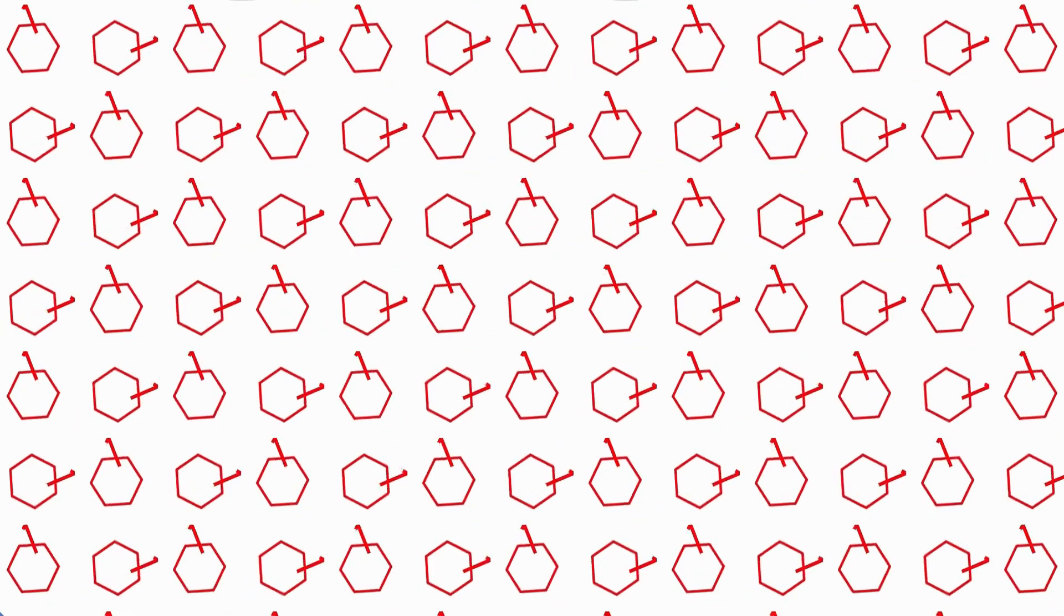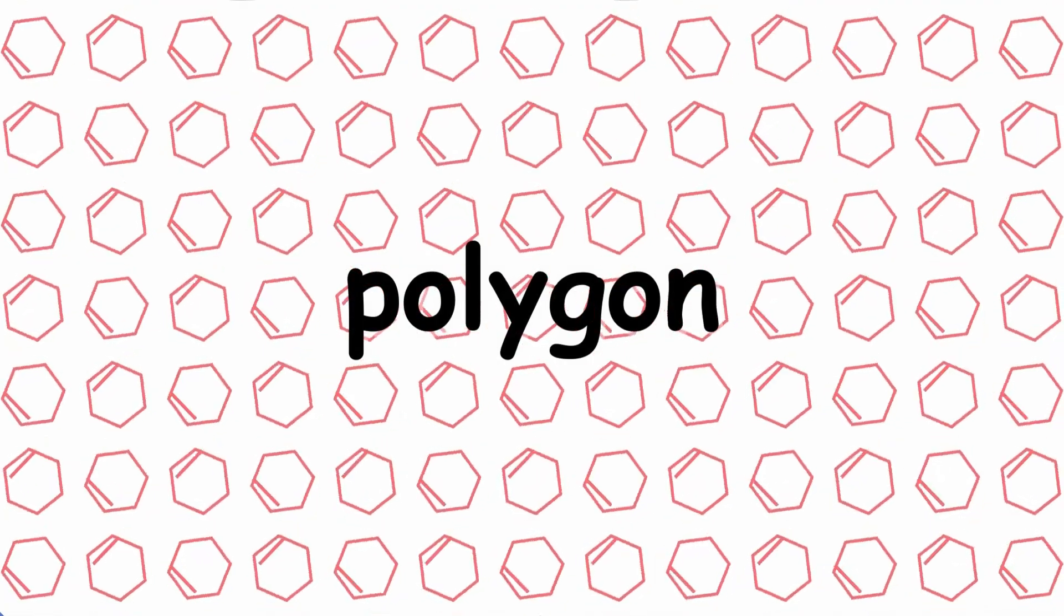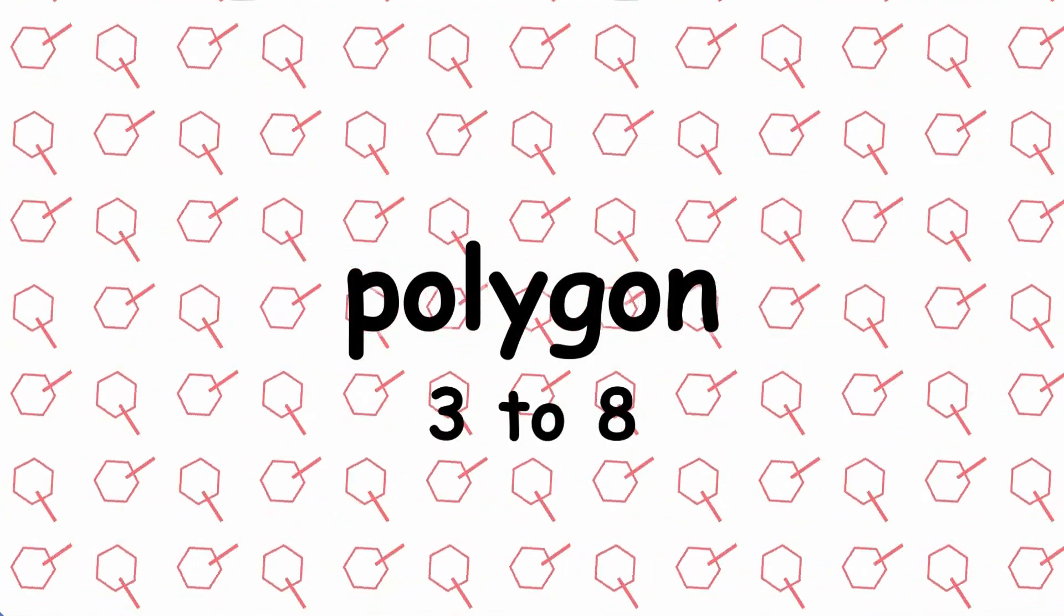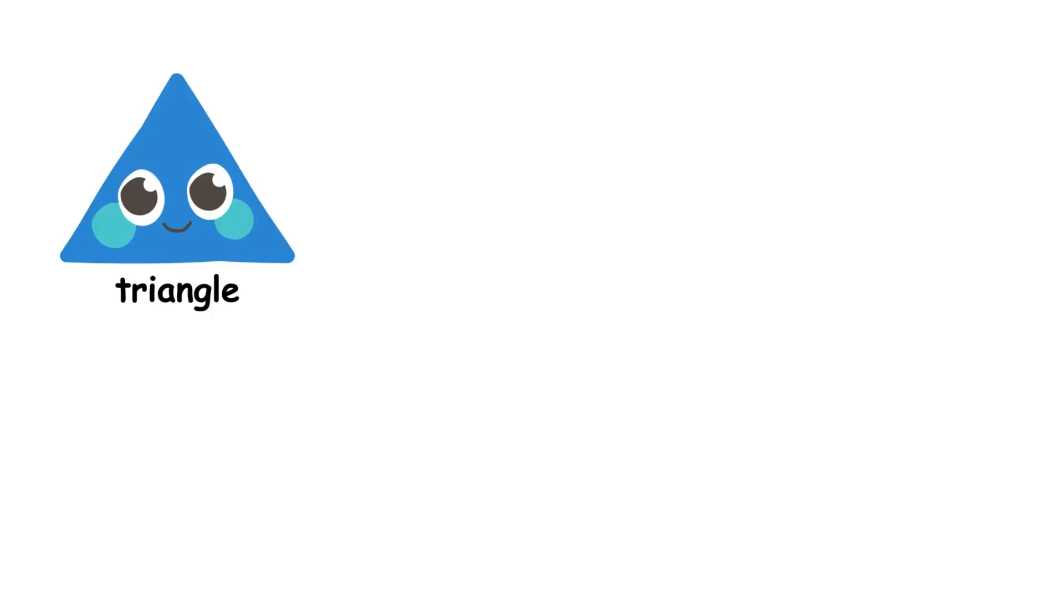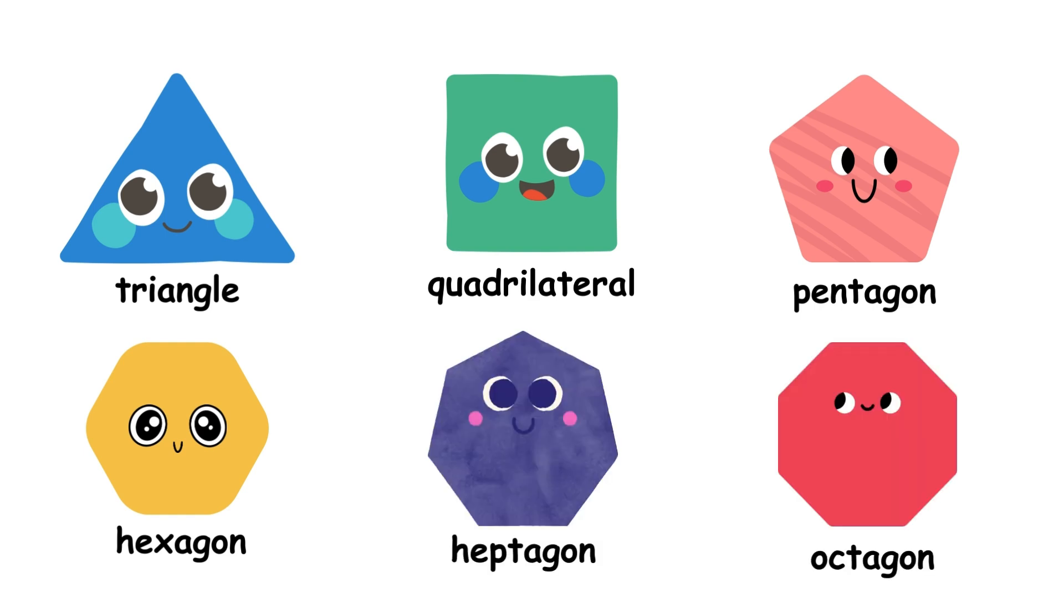A shape made of a certain number of sides is called a polygon. Polygons are named based on the number of sides they have. From three to eight, the names are triangle, quadrilateral, pentagon, hexagon, heptagon, and octagon.